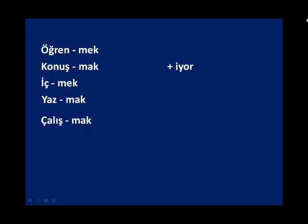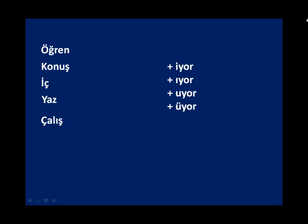You're going to have to choose the correct form according to the verb through vowel harmony, but first you have to omit the infinitive suffix. So the first step is obtaining the root, and then add '-iyor' and harmonize it. So we get: öğren + iyor, konuş + uyor, iç + iyor, yaz + ıyor, çalış + ıyor. This is vowel harmony — it should be simple.